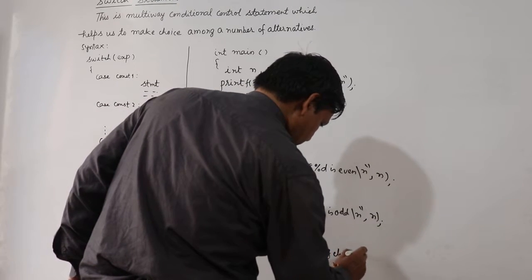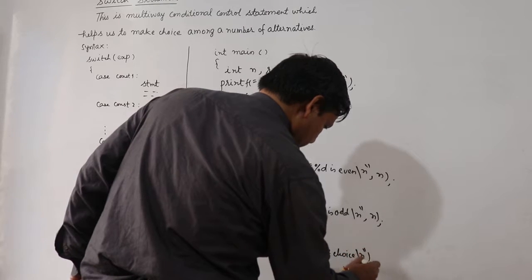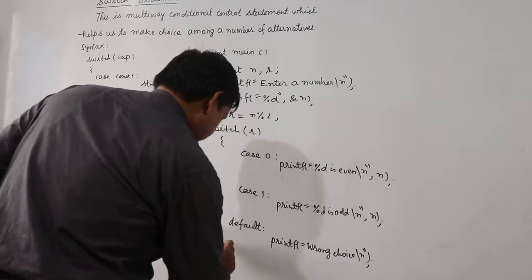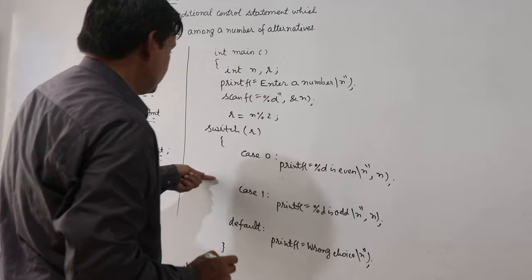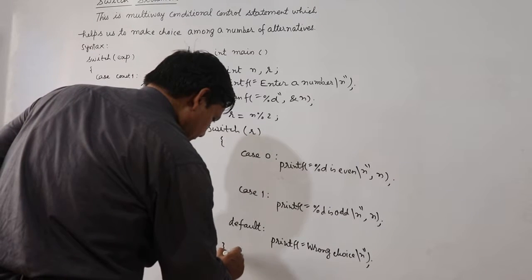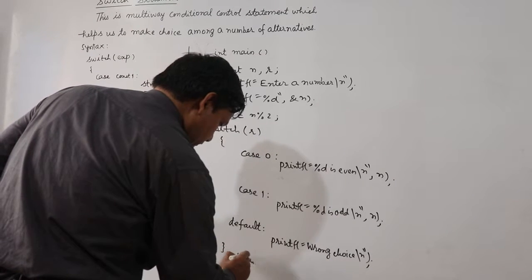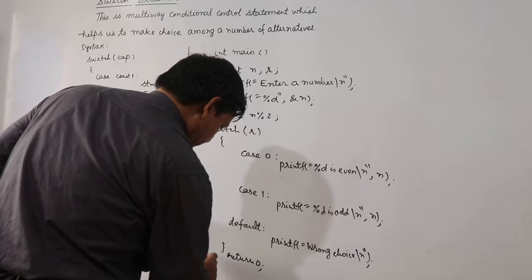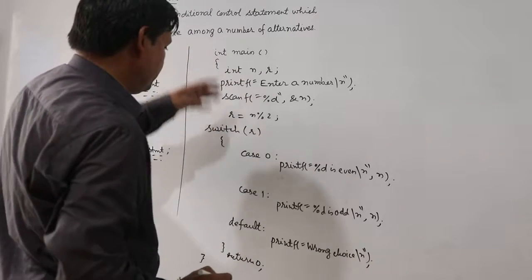So, I am using the switch statement here, return 0 and there this is the end of the main function.